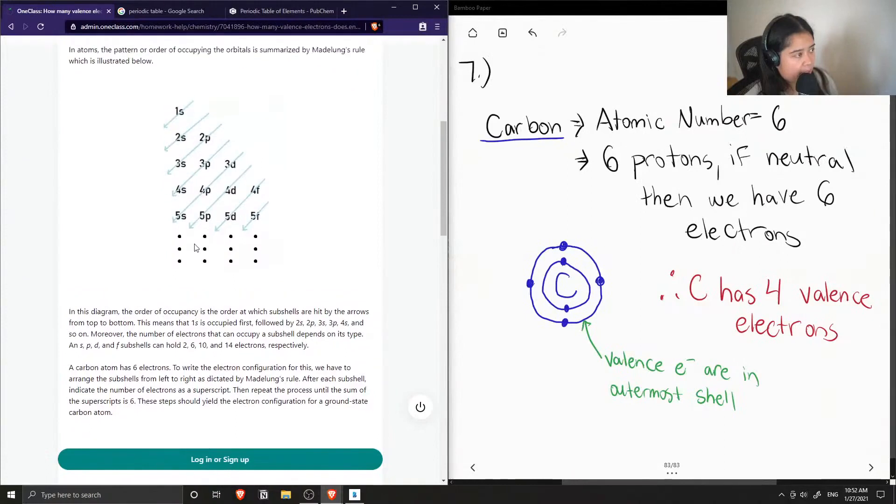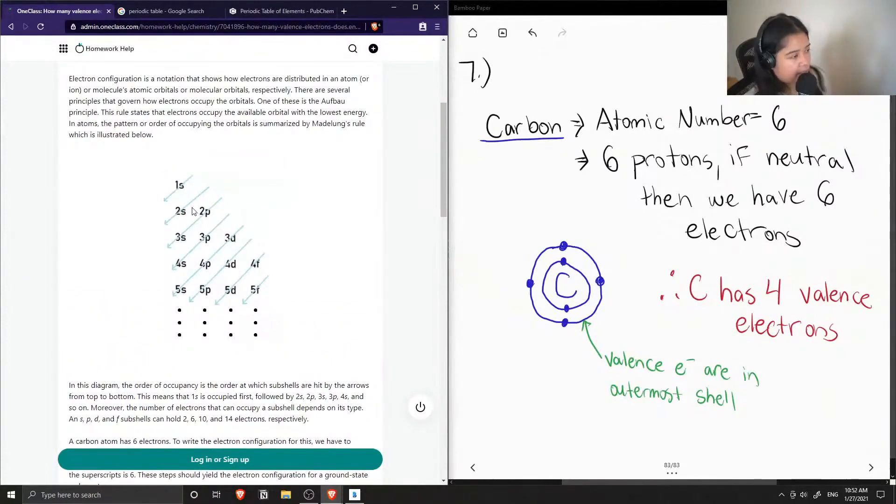Okay, so they show how this is an easy way of writing out electron configuration. And then as you go down the arrows, this is the order in which you would write out your electron configuration.